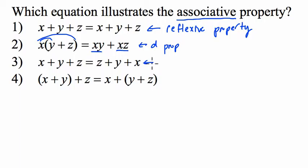In choice three, this is the commutative property. How do I know that? Well, it's the commutative property because the terms x, y, and z are changing order. So z is first and x is last. And we know that if we change the order of terms when we're adding them, then the sum does not change. That's the commutative property.